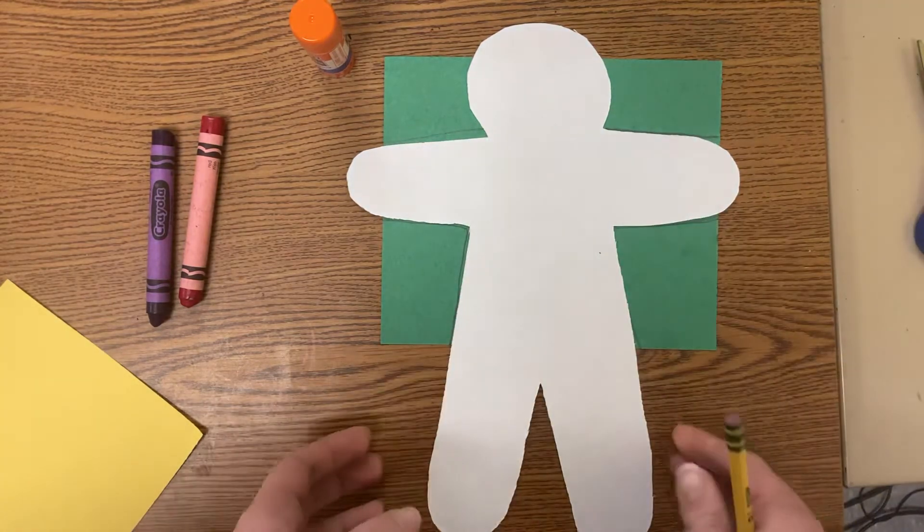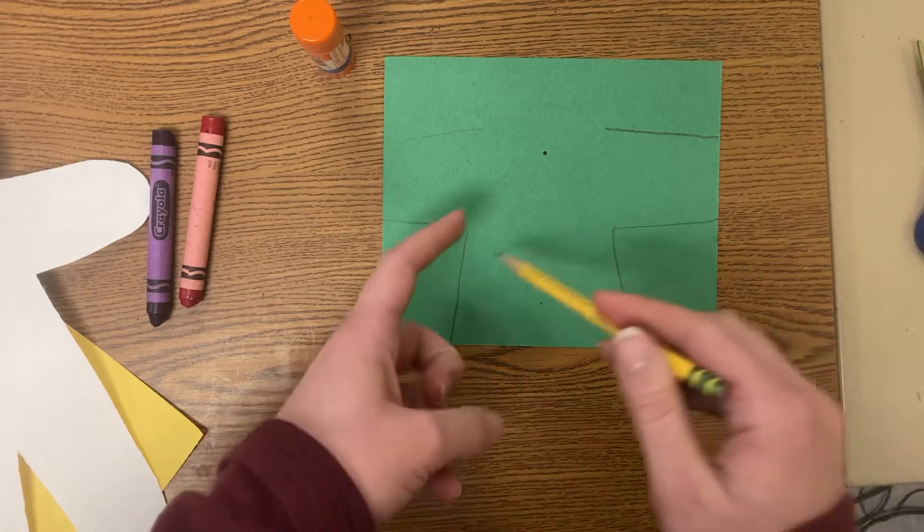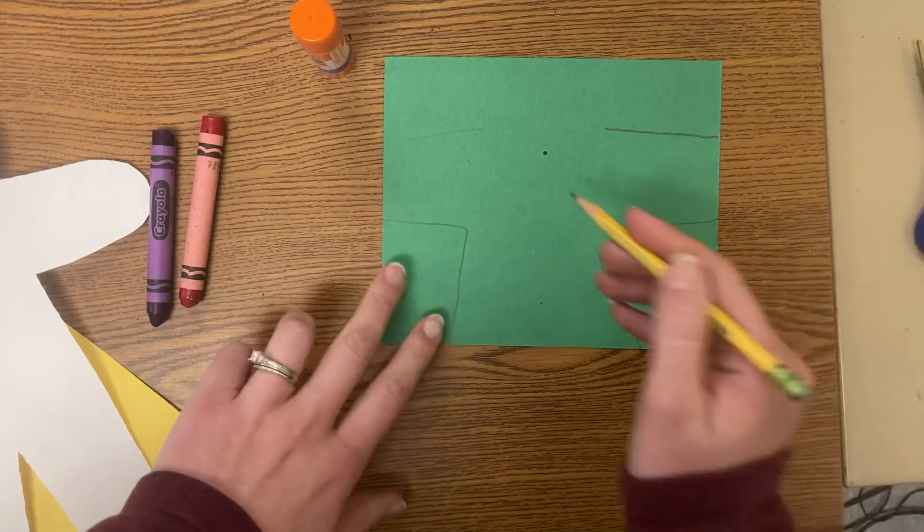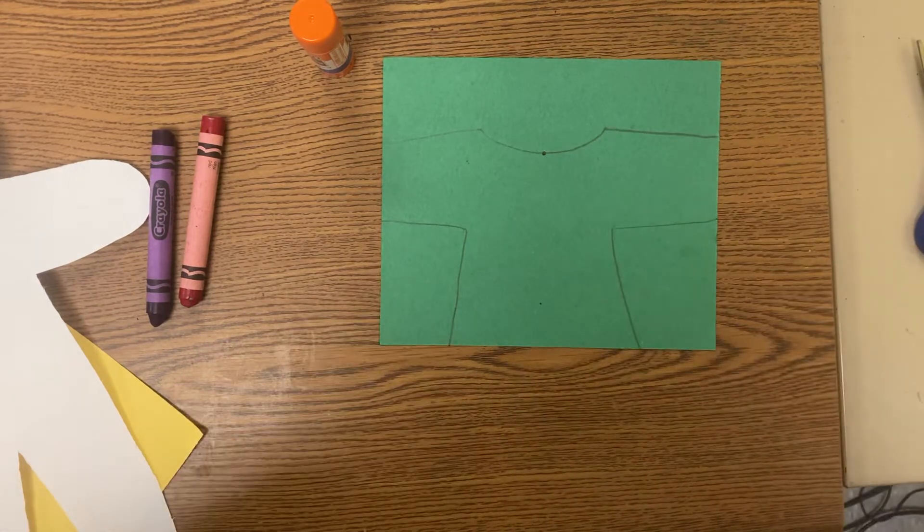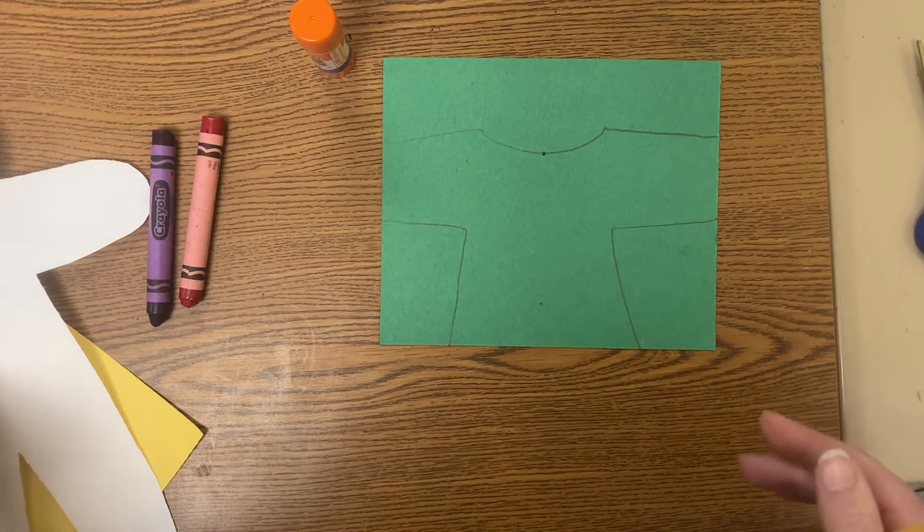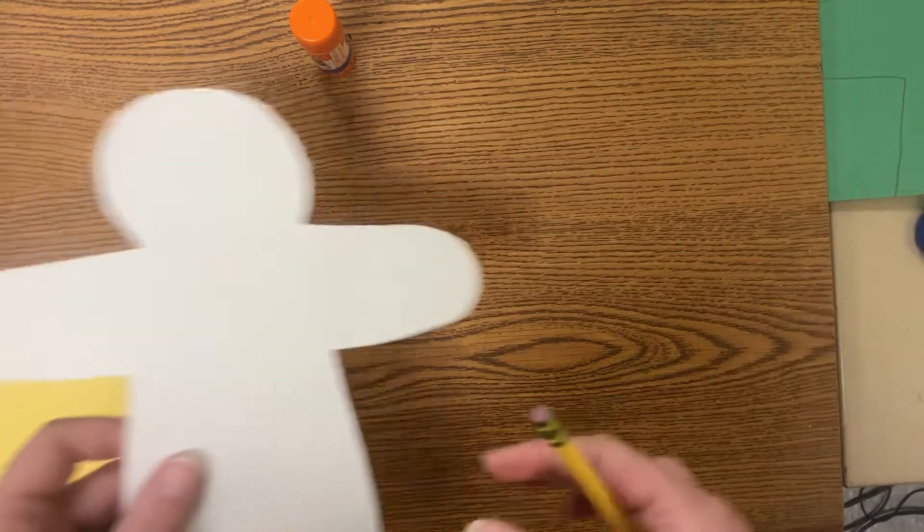When you pick this up it doesn't quite look like a shirt yet. I can see the bottom and then I can see the sleeves and then you make a place for the neck or the head of my croquis. I'm going to set that to the side, I'll cut that out in a second.